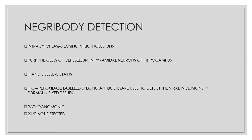Negri body detection is used to confirm postmortem diagnosis. Negri bodies are intracytoplasmic eosinophilic inclusions seen mainly in the pyramidal neurons of the hippocampus and Purkinje cells of the cerebellum. Histological staining with H&E or Seller's stains can be used, and immunohistochemical staining with peroxidase on formalin-fixed tissues is more sensitive and specific. Negri body detection is pathognomonic of rabies, but absence of Negri bodies in 20% of cases does not rule out the diagnosis.